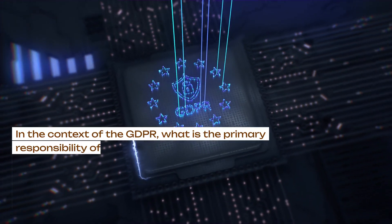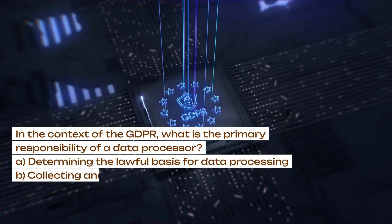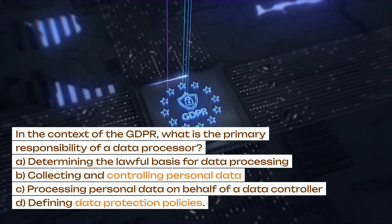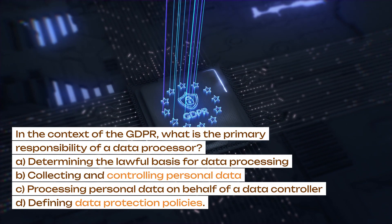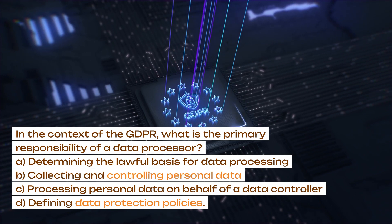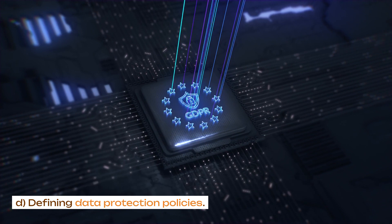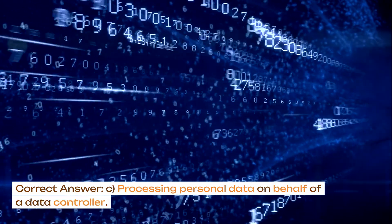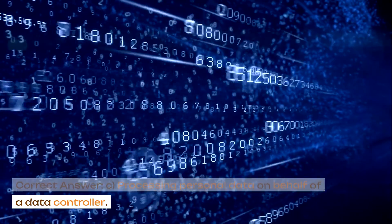In the context of the GDPR, what is the primary responsibility of a data processor? A. Determining the lawful basis for data processing. B. Collecting and controlling personal data. C. Processing personal data on behalf of a data controller. D. Defining data protection policies. Correct answer: C. Processing personal data on behalf of a data controller.